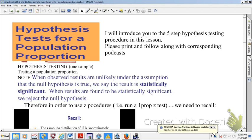I introduced you to the five-step procedure in the last podcast. Note that when observed results are unlikely under the assumption that the null hypothesis is true, we say that the result is statistically significant. And when results are found to be statistically significant, we reject the null hypothesis. This will all make a little more sense as we move along.